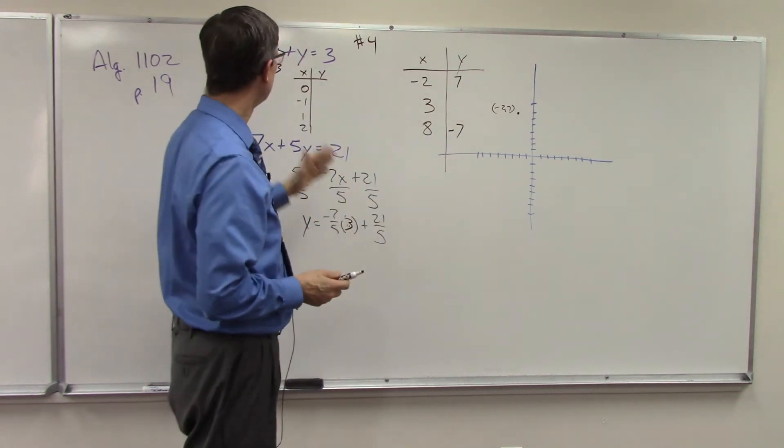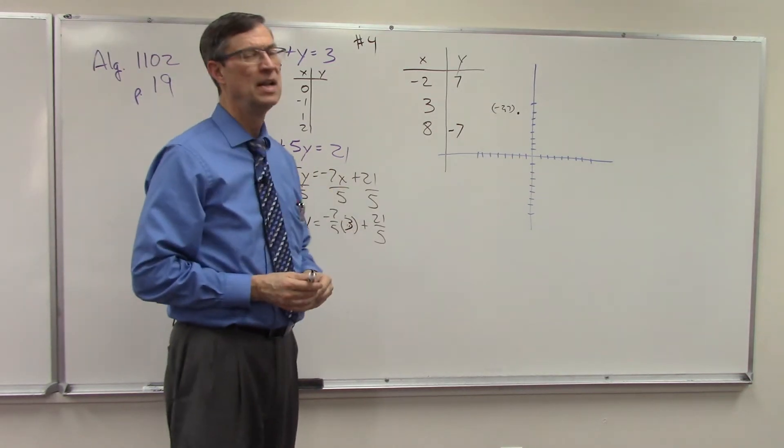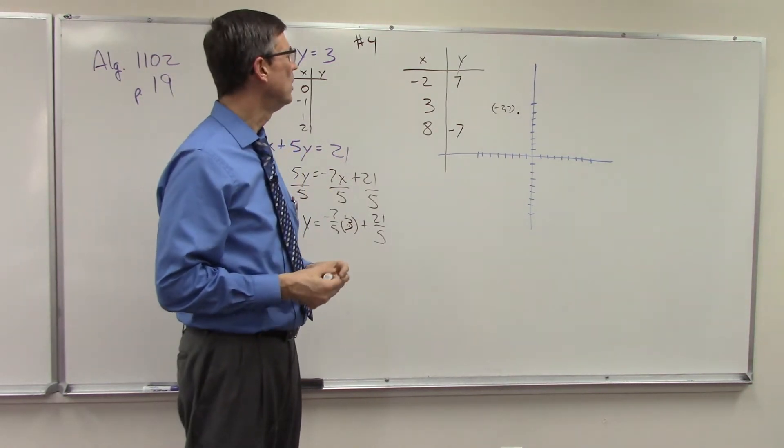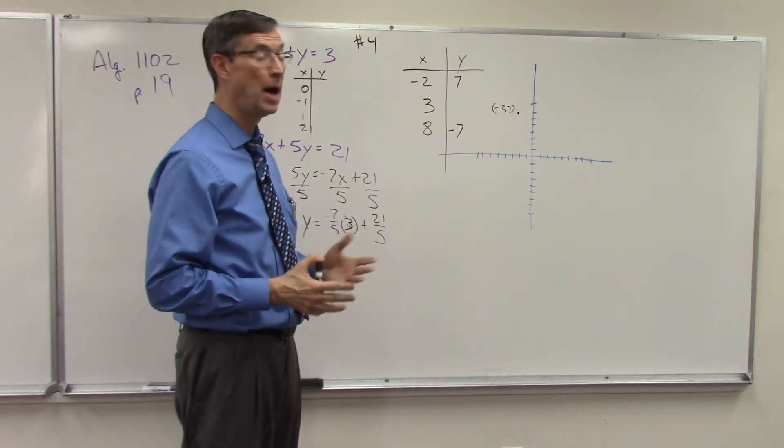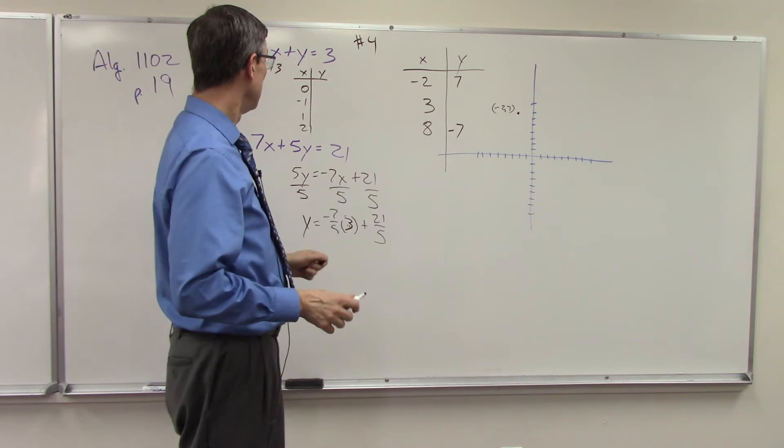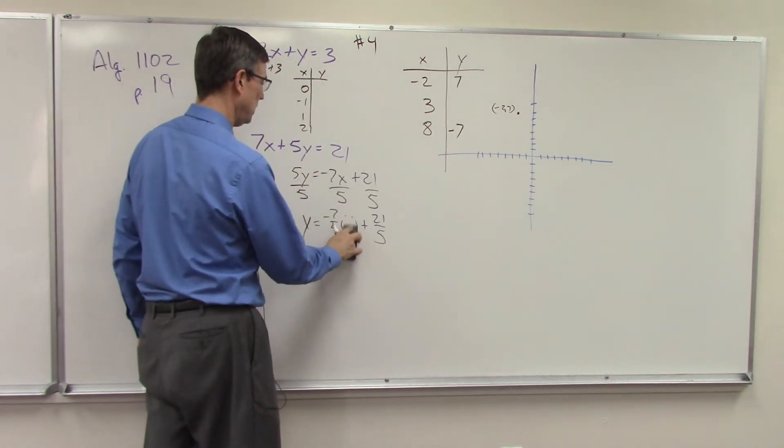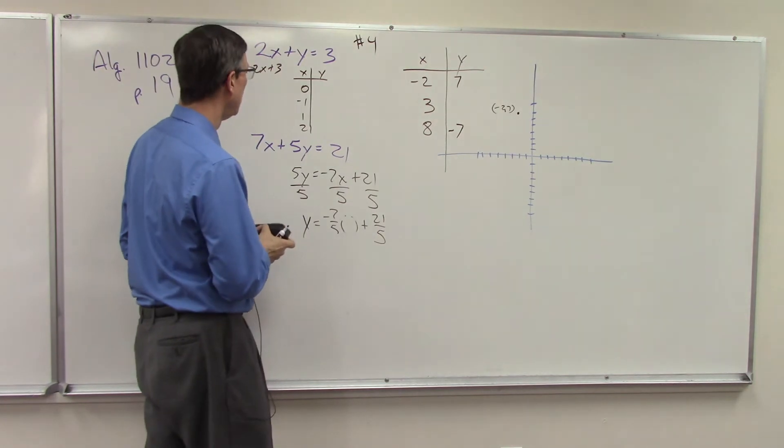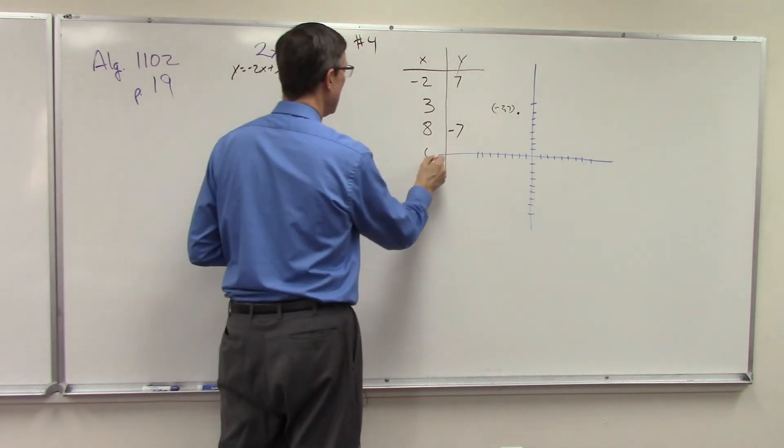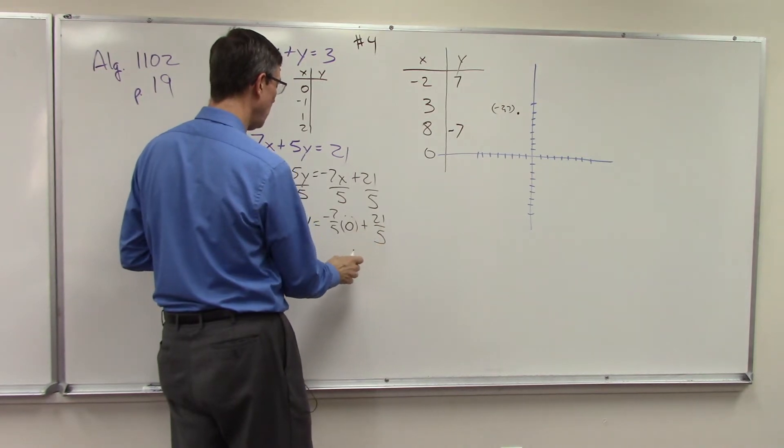Because of these particular numbers and these fractions being the way they are, it's really hard to guess what numbers. Now, honestly, you could plug in anything. Like, I think we started to do 0, and if we did that, if I plugged in 0, I would have the fraction 21 fifths.